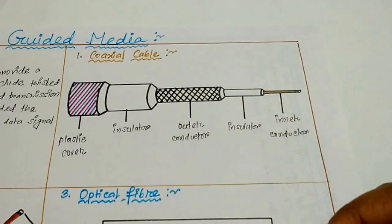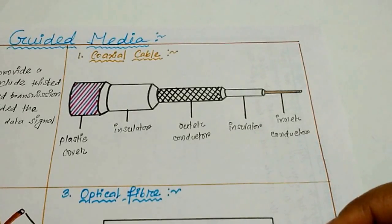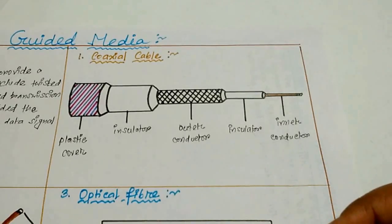It has a central core conductor of solid wire enclosed in an insulating shield, which in turn is enclosed in an outer conductor of metal foil. The outer metallic wrapping serves both as a shield against noise. This outer conductor is enclosed in an insulating sheath and the whole cable is protected by a plastic cover. The most common coaxial connector is the bayonet nail concealment connector.